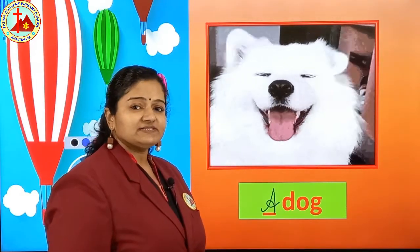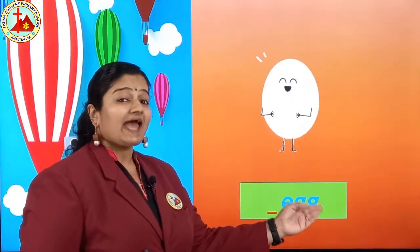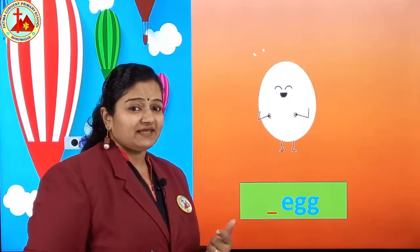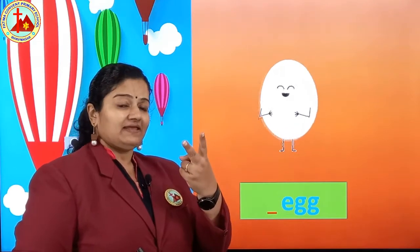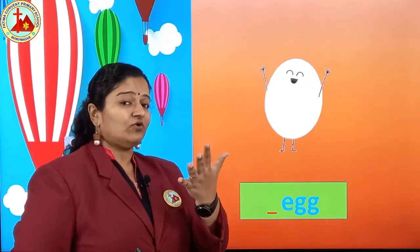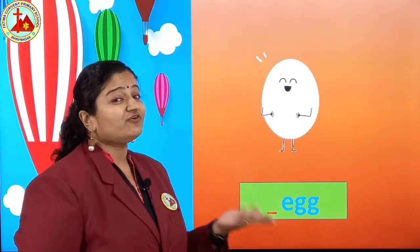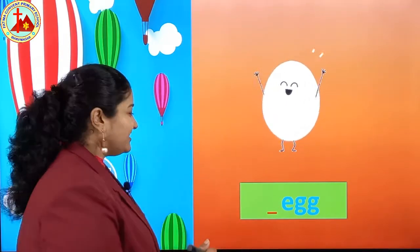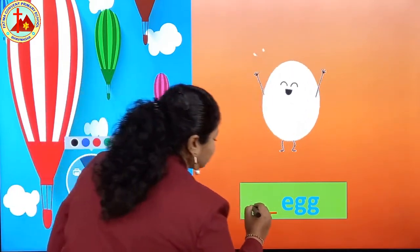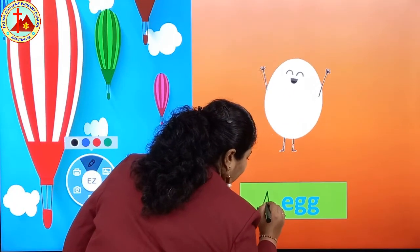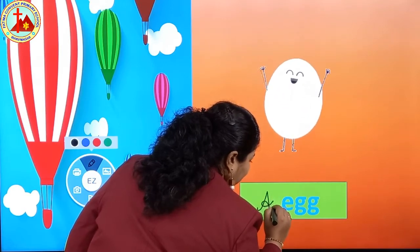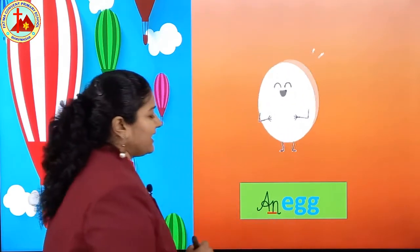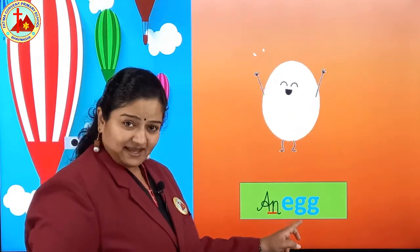Next one is egg. E, double G — egg. First letter of egg is E. E is a vowel. Before vowel you have to put AN. So write cursive capital A and from A directly write AN: an egg.